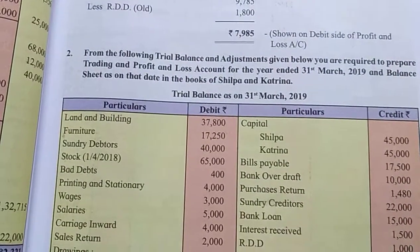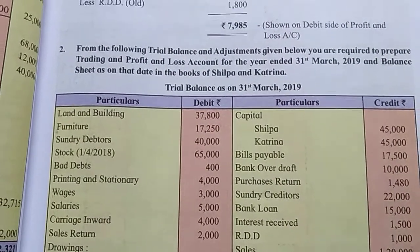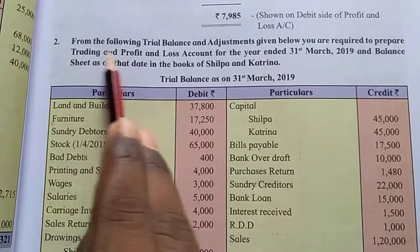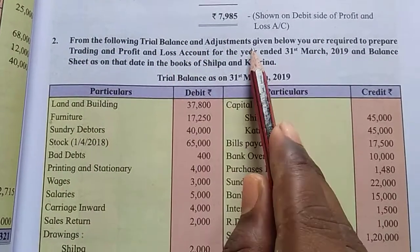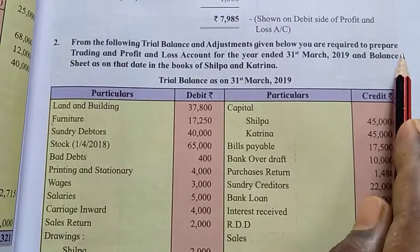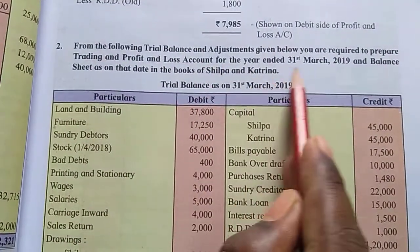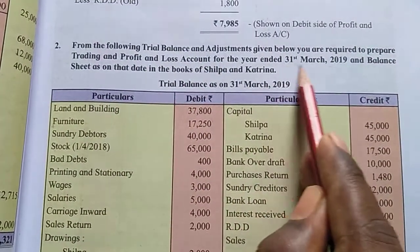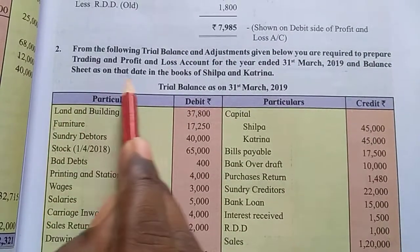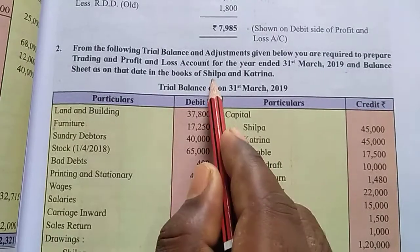Hello guys. I am going to ask you a second question. So first of all, read the question. From the following trial balance and adjustments given below, you are required to prepare trading profit and loss account for the year ended 31st March 2019 and balance sheet as on that date in the books of Silpan and Katrina.